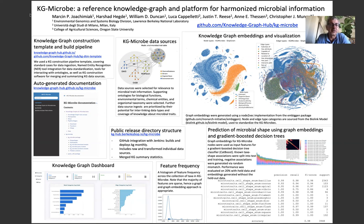We also have a public release directory structure at the provided link. Here we include results from builds and deployments of the knowledge graph, which can happen monthly via GitHub integration with Jenkins. The directory structure includes both the raw and transformed individual data sources, the merged knowledge graph summary statistics, as well as the knowledge graph files themselves.